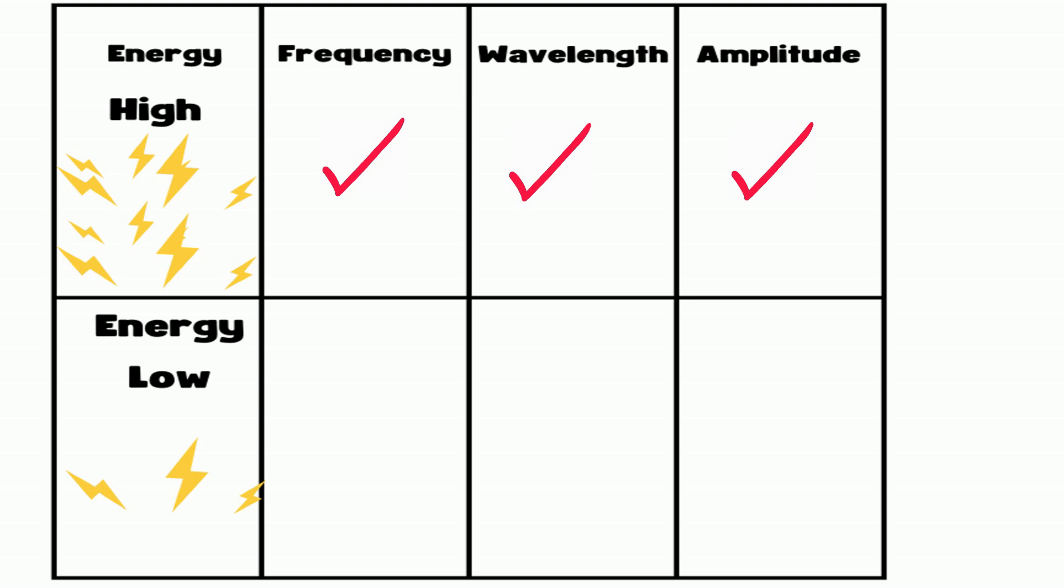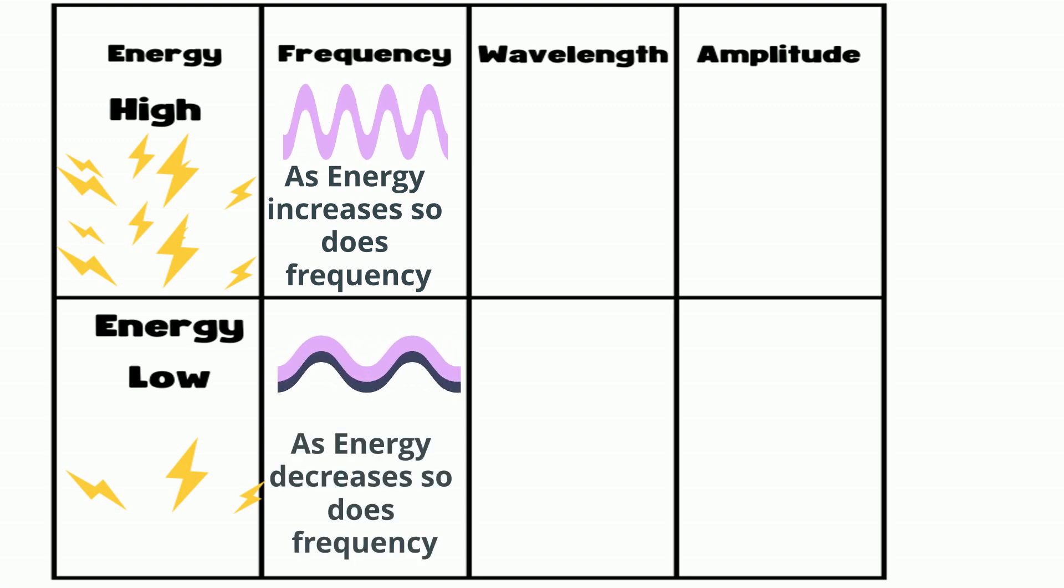At the top of the chart will be high energy, and at the bottom will be lower energy. When energy is high, frequency will be greater. Frequency is the measure in hertz and is the number of waves that pass a fixed point in a second. When you have low energy, then the frequency will also be lower.